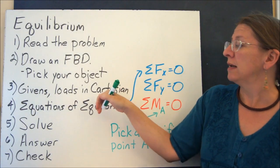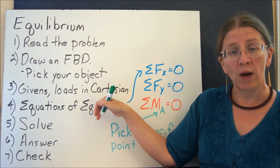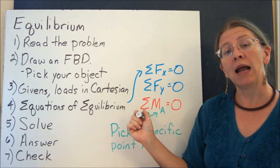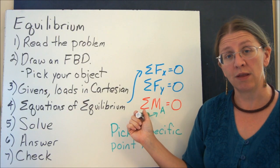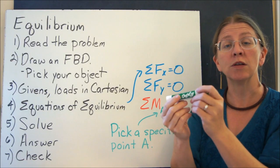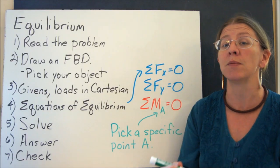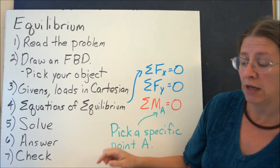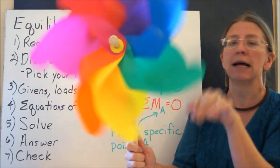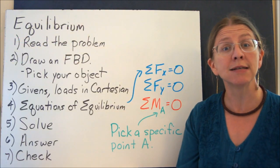So once you've done that, find your givens, write down your loads. Our equations of equilibrium are now going to have an extra equation more than they had before. Because anything that balances has to be balanced both in the sum of the forces and now in the sum of the moments. After all, if I have an object that's going around like this, it's not in equilibrium. It's not allowed to spin either.